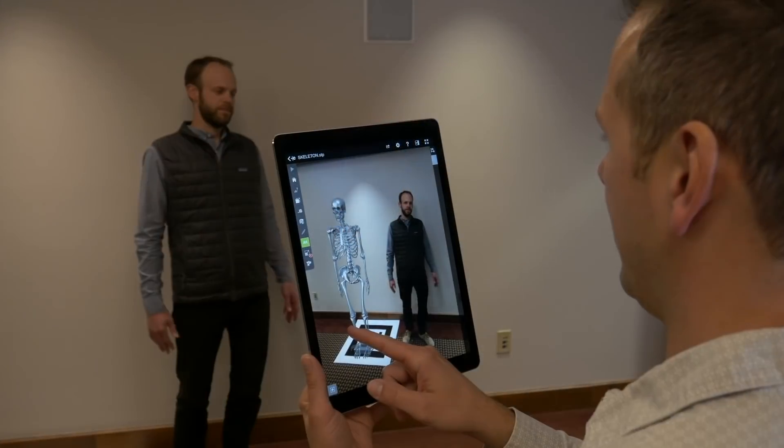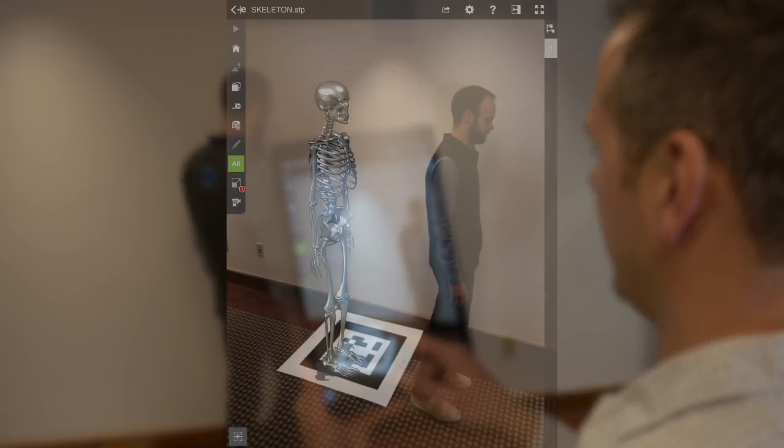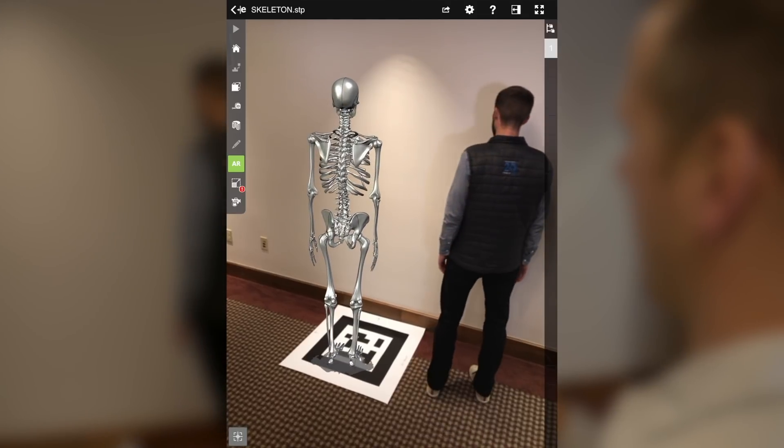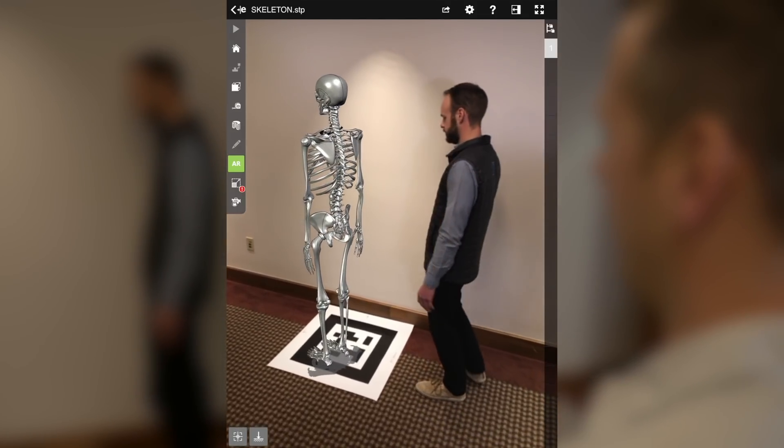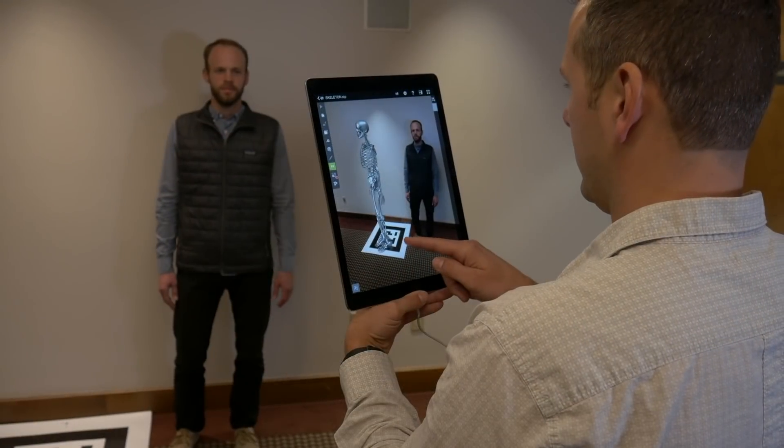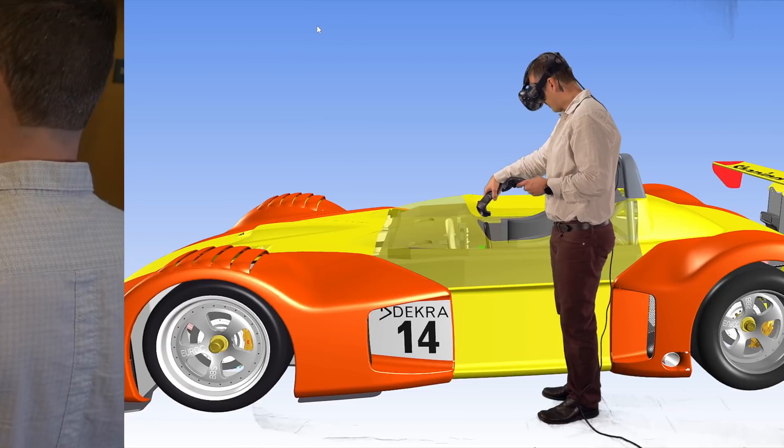SolidWorks, a longtime partner of TechSoft 3D, is using Hoops Visualize within e-drawings for desktop and mobile. Design teams can see products at full scale so their true size is obvious. Using AR functionality, users can easily place products on the table in front of customers for powerful collaboration and decision-making.